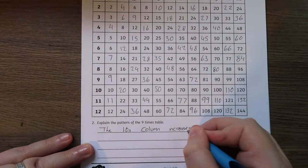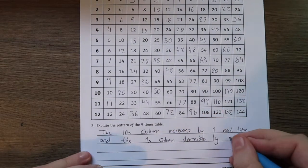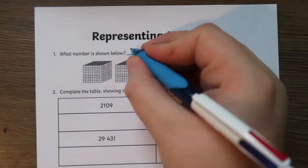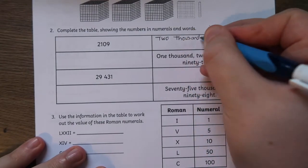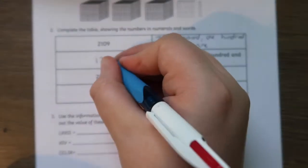Here are just a few examples of what's included. We have number and place value, representing numbers, addition and subtraction, and many more.